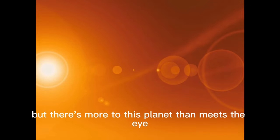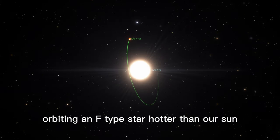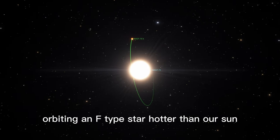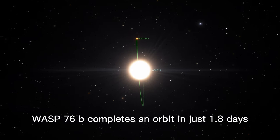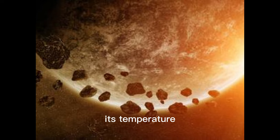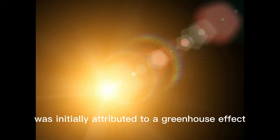But there's more to this planet than meets the eye. Orbiting an F-type star hotter than our sun, WASP-76b completes an orbit in just 1.8 days. Its temperature, around 1,900 degrees Celsius, was initially attributed to a greenhouse effect.